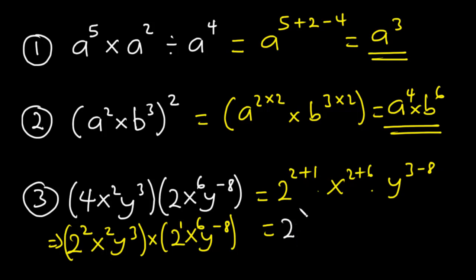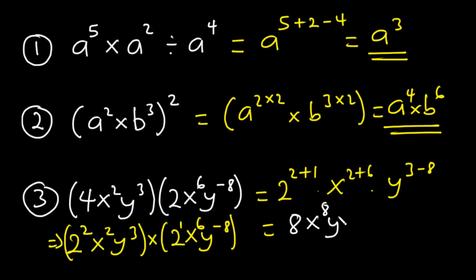2 exponent 3 is equal to 8. x exponent 2 plus 6 is x exponent 8. And y exponent 3 minus 8 is y exponent negative 5. So the final answer is 8 x exponent 8 y exponent negative 5. That's it for this video. Thank you for watching, and see you in my next video. Bye-bye.